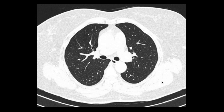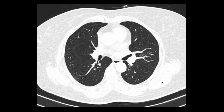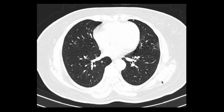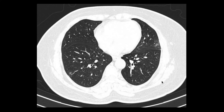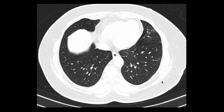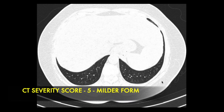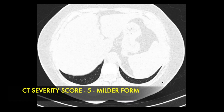This is another RT-PCR positive patient demonstrating ground glass opacities in the peripheral region. A total of 5 segmental regions showed ground glass opacities with less than 50% involvement of parenchyma, and thus a CT severity score of 5 is given for this case, which is a milder form.